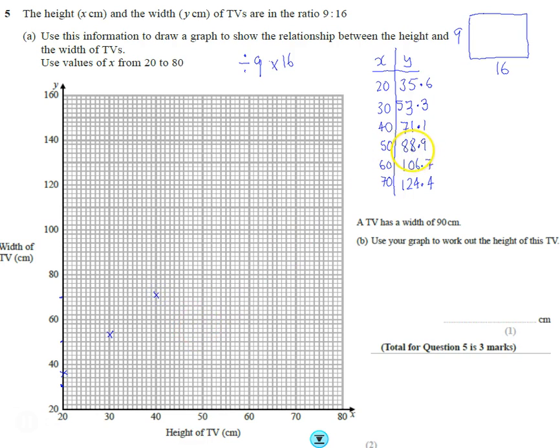50 goes to 88.89. 50 goes to 88, almost got 90. 60 goes to 107. Let's go up to 100. 70 goes up to 124. 120 goes up to 124.